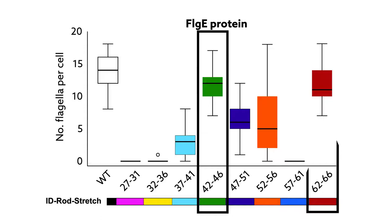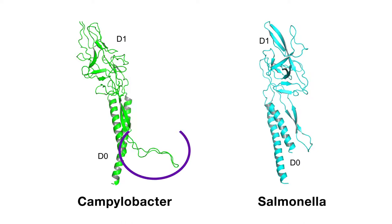Finally, the scientists investigated the hook protein in Campylobacter, which has 20 more residues in its ID Rod Stretch than Salmonella. When they deleted the segment, they saw that cells had a much harder time swimming, and many of their flagella had broken off.